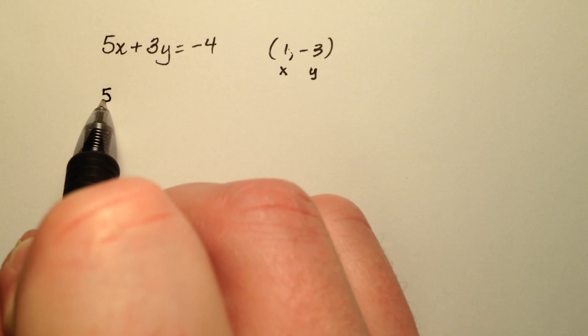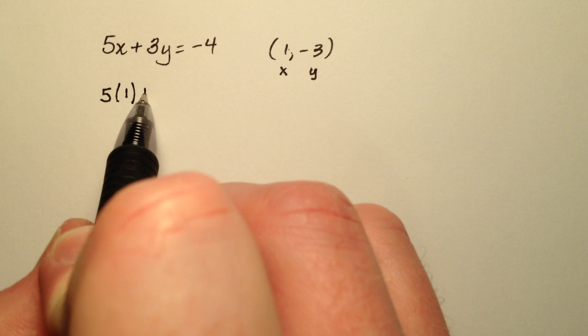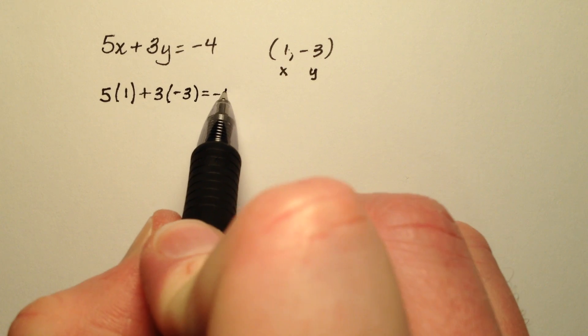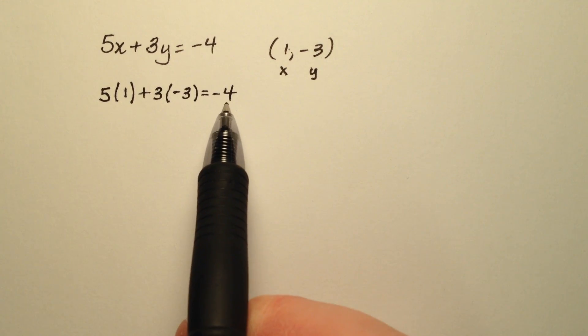So 5 times my x value, which is 1, plus 3 times my y value, which is negative 3, and that perhaps equals negative 4.